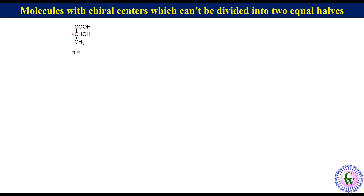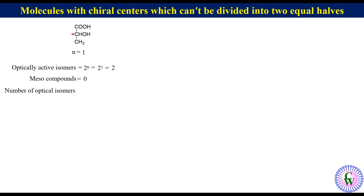Here n is equal to 1. So the number of optically active isomers is equal to 2 raised to the power n, which equals 2 raised to the power 1, which equals 2. The number of meso compounds is equal to 0. So the total number of optical isomers will be equal to 2 plus 0, which equals 2. These two isomers are R-lactic acid and S-lactic acid.